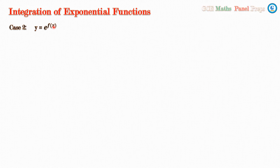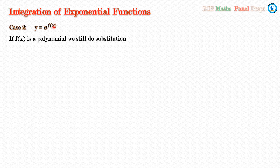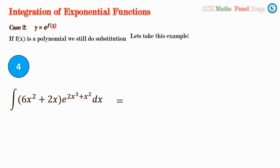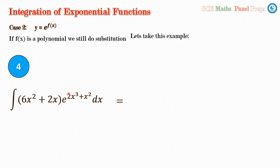Now let us look at the second case where we have y = e^(f(x)). We don't have just ax or ax + b like a linear term — we now have f(x), some sort of a function. If f(x) is a polynomial, we still do substitution. Let's take Example 4: the integral of (6x² + 2x) · e^(2x³ + x²) dx. We look at the power of e — we have e^(2x³ + x²). If you differentiate this power, you get 6x² + 2x, which is exactly what we have in front of the e.